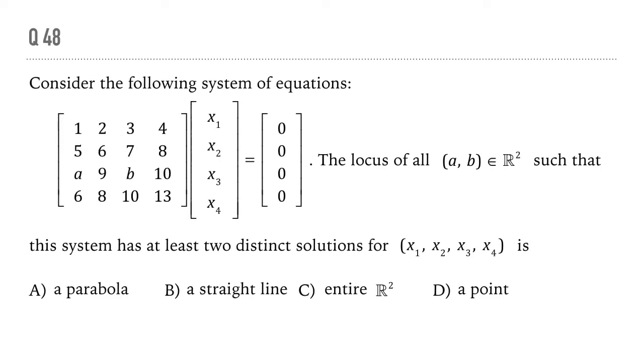Take a moment to read the question. We have been given a system of equations in four variables x1, x2, x3, and x4, and we have to find out the locus of all points such that this system has at least two distinct solutions. How do we do this question?